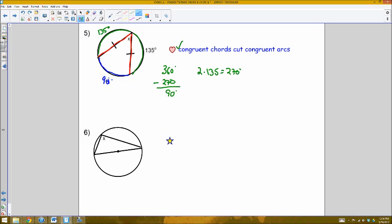If this arc is 90, and X is an inscribed angle, meaning its vertex is on the circle, then X would have to be one half of that 90 degrees, which is 45 degrees.